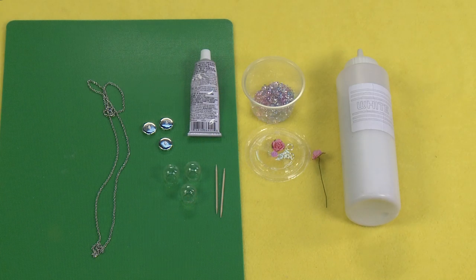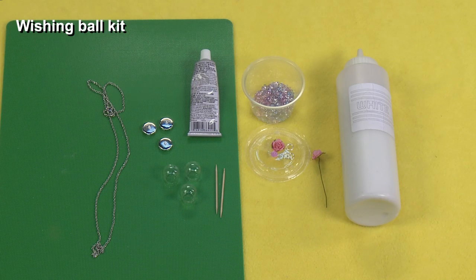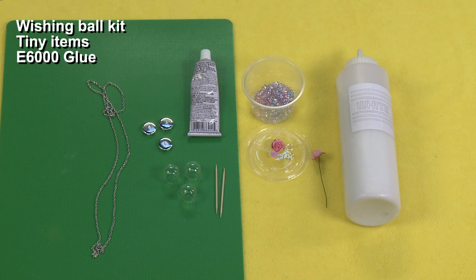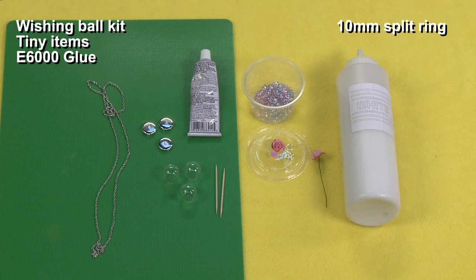For this project you will need a wishing ball kit, very tiny items like roses, glitter, tiny jewels, seashells, etc., E6000 glue, a split ring 10 millimeters round, metal chain, and a toothpick.